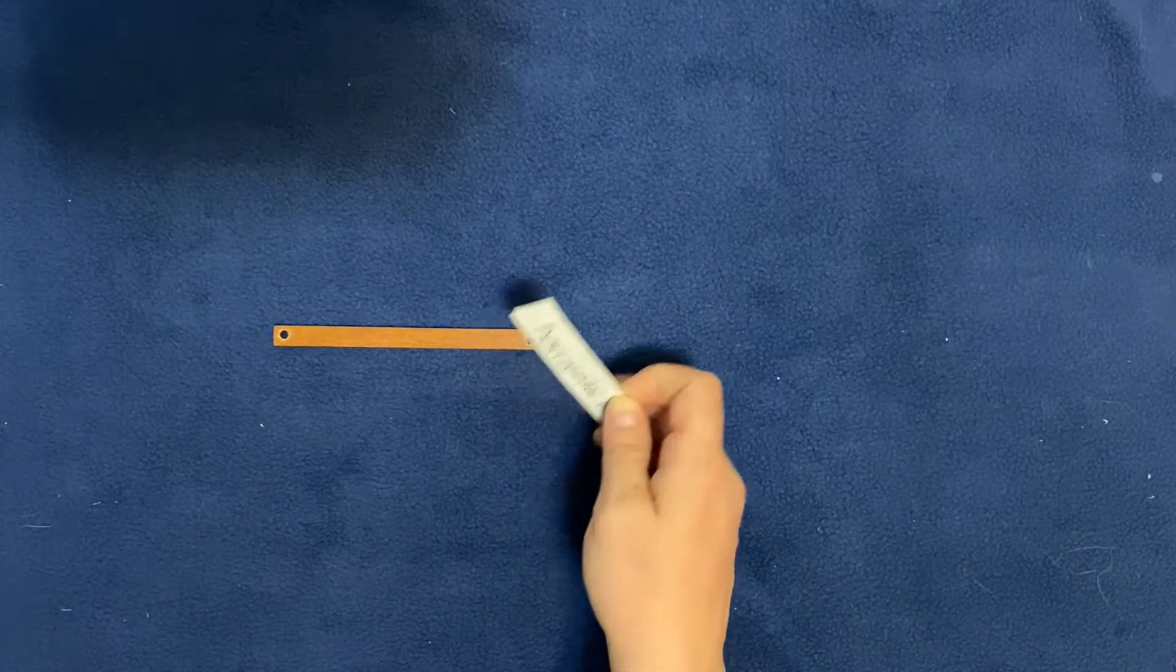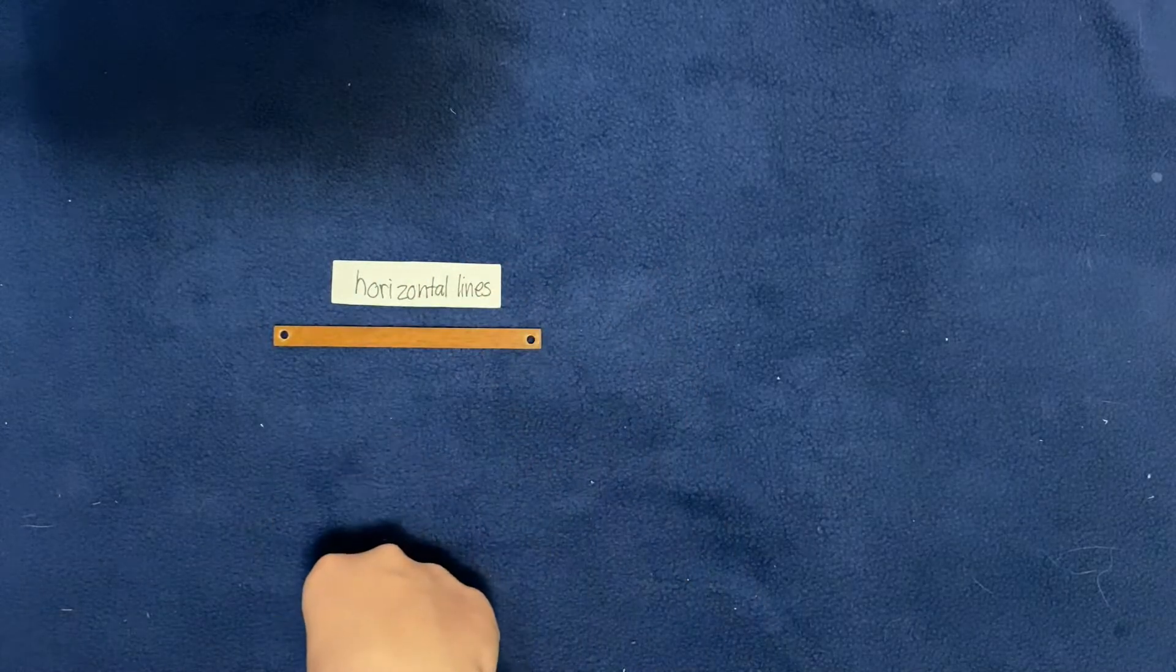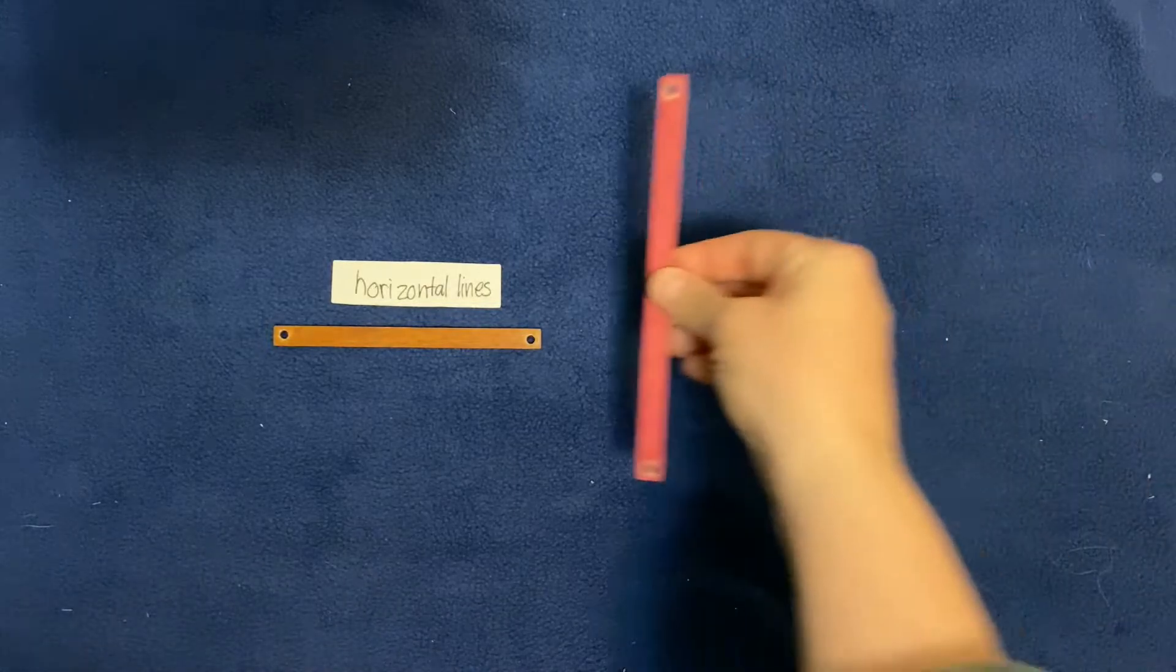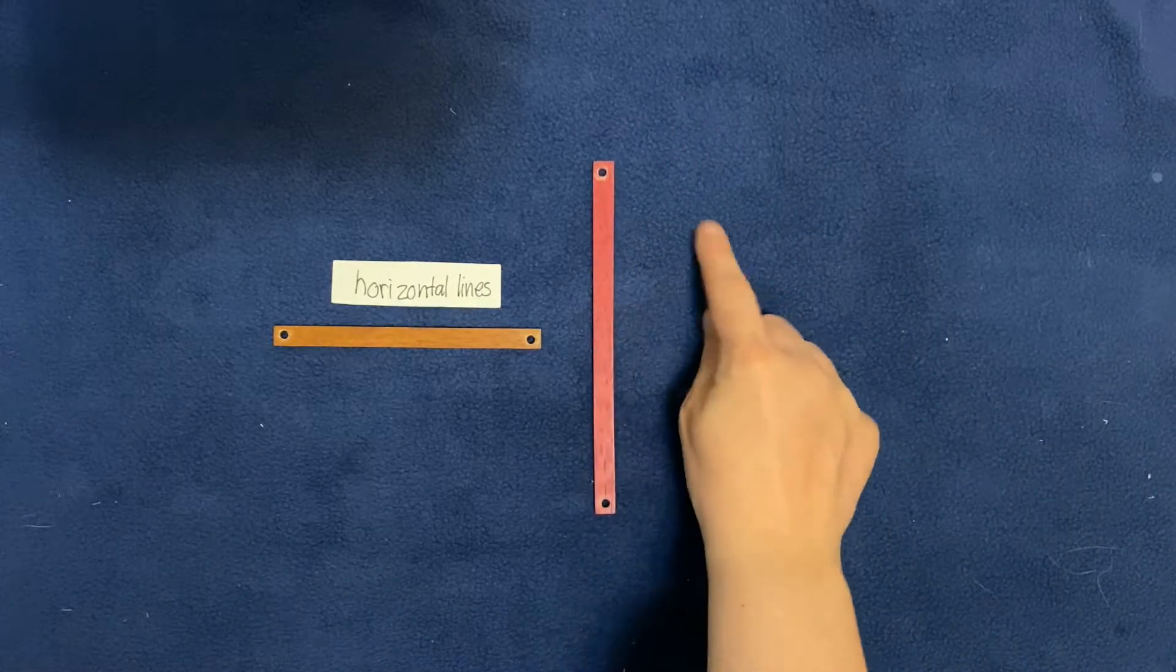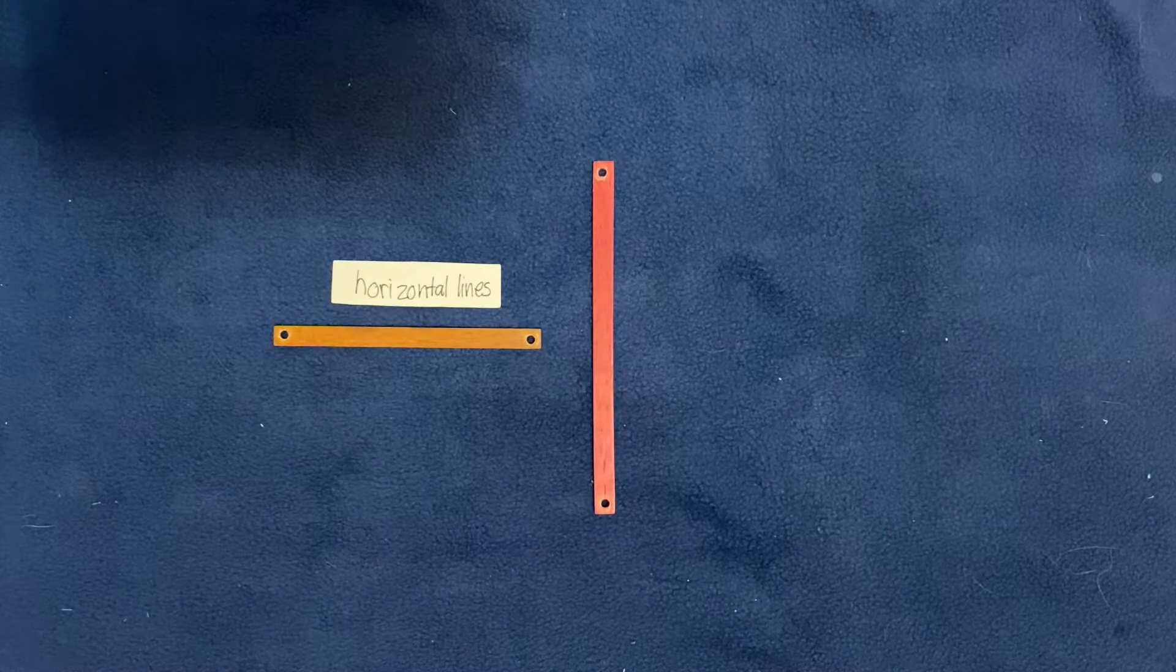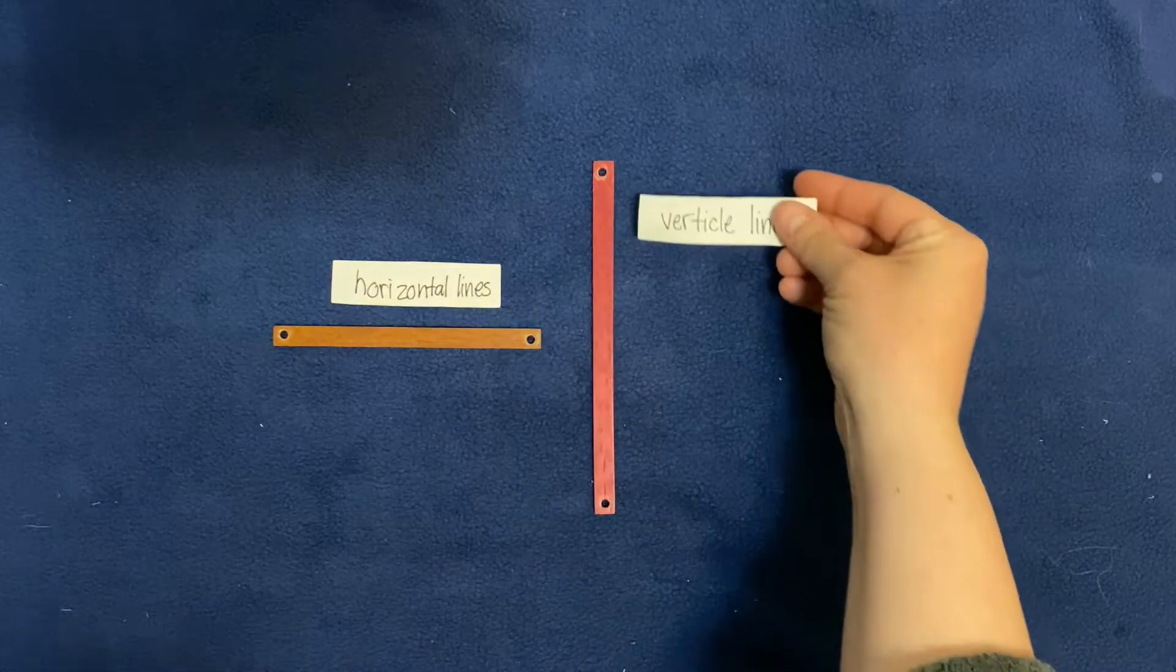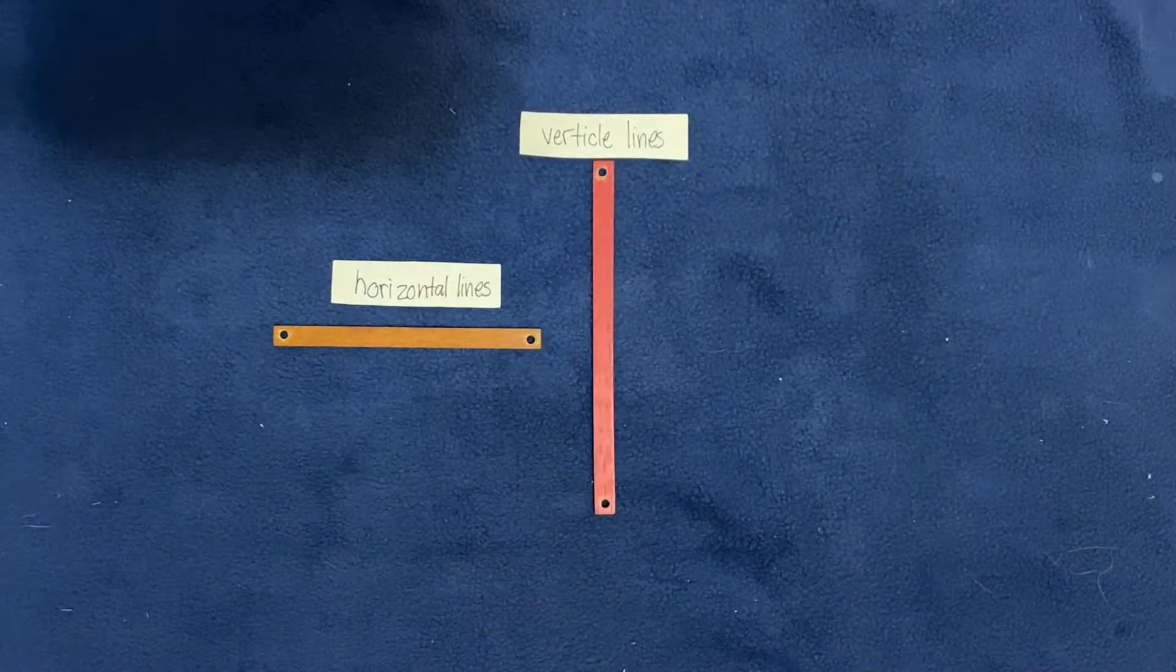Now here I have a line that's going up and down like a skyscraper, straight up and down. When a line goes up and down, we call that vertical—a vertical line.